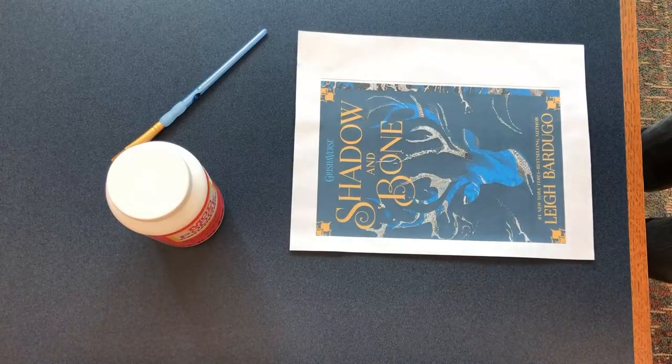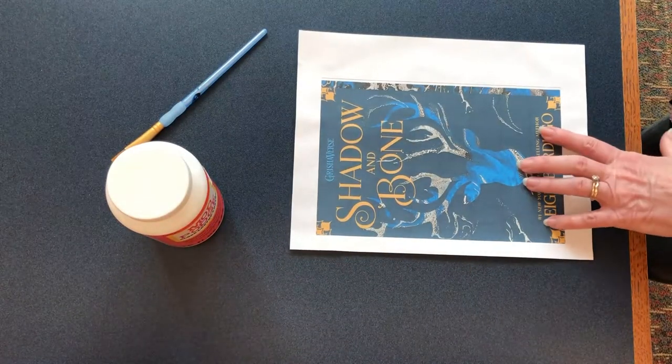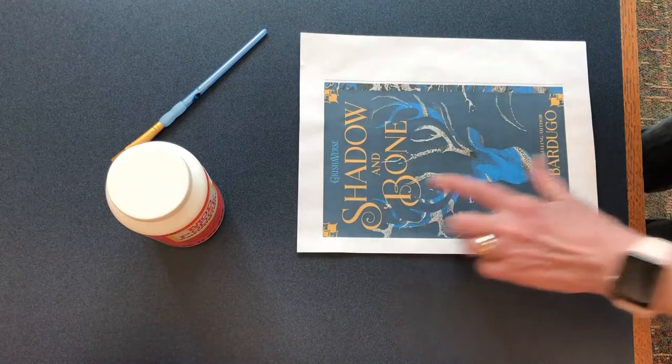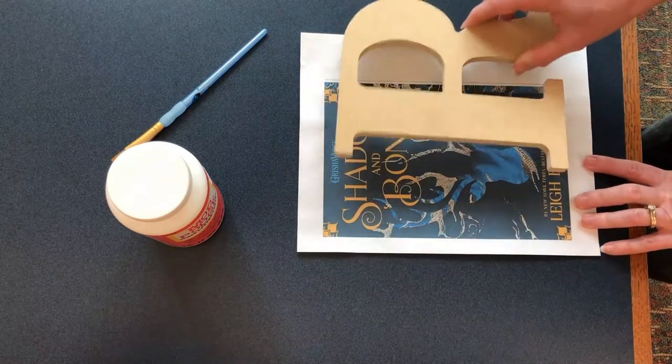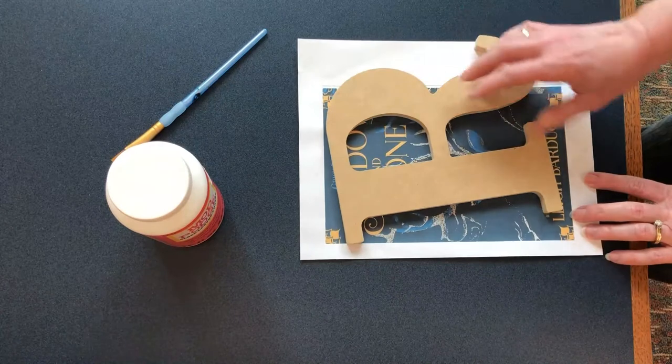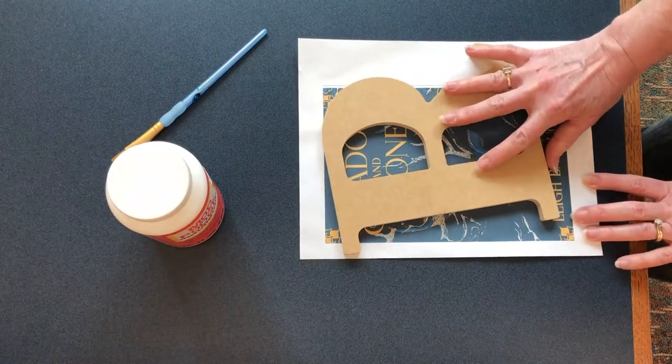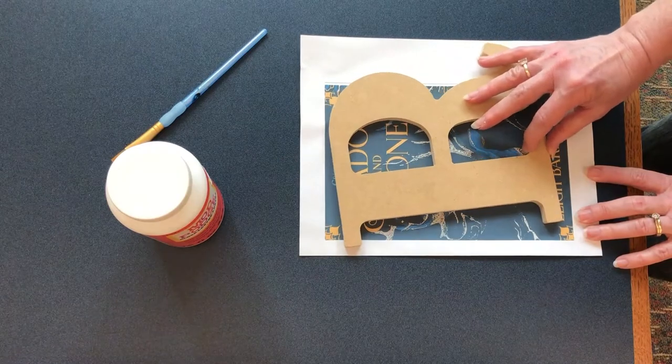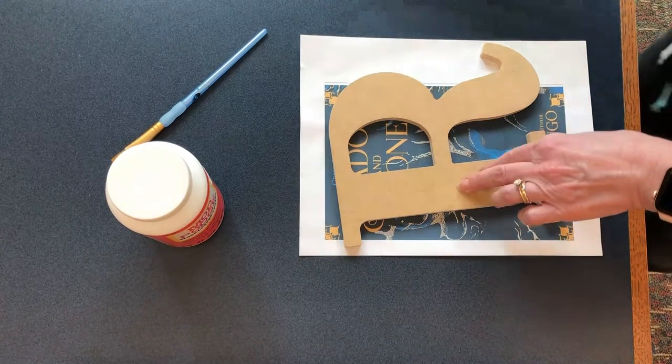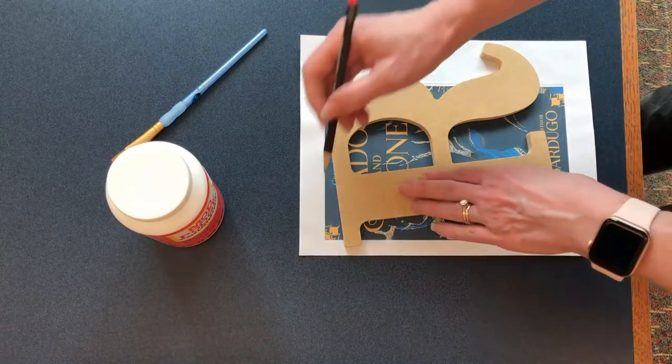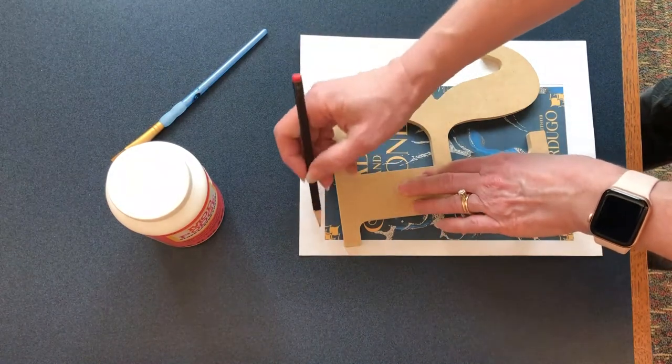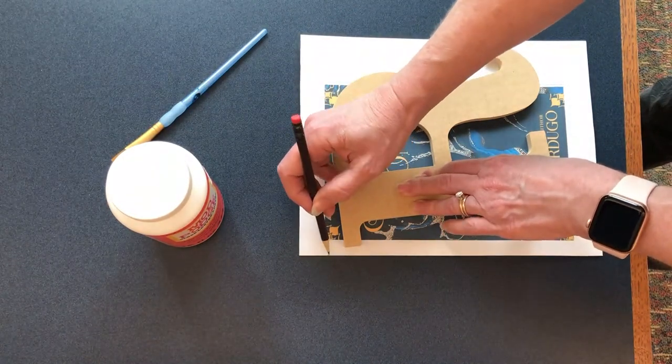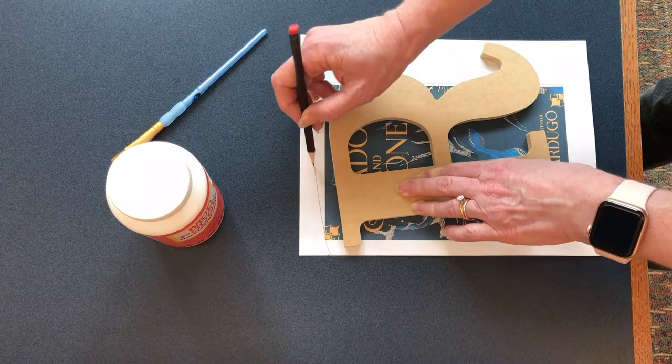So back to our craft. We have the first book cover we're using. I want to get most of the picture so I'm going to take this R and place it on the side of the picture. I'll angle it so I get a lot of the letters and the actual antlers. Then I'm going to trace around with my pencil. I'm going to leave a margin so we can wrap it over the side of the letter.